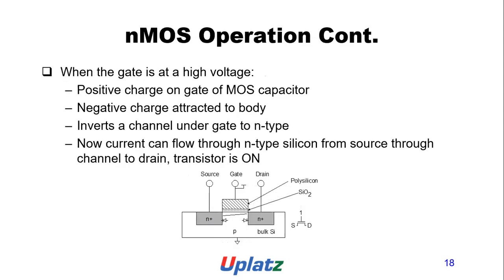NMOS operation when gate is at high voltage: positive charge on the gate attracts negative charge into the body. This inverts the channel under the gate to N-type. Now current flows through N-type silicon from source through the channel to drain — the transistor is on.